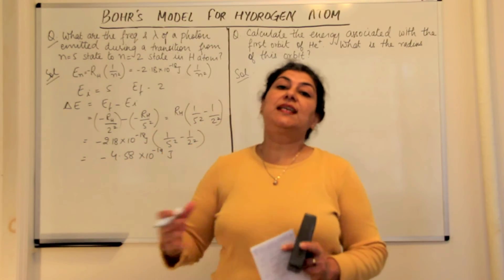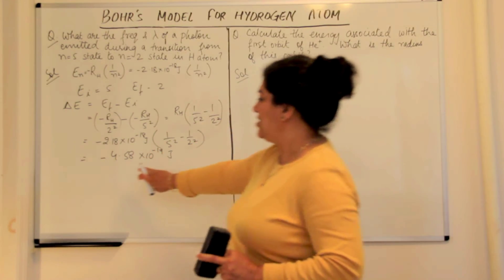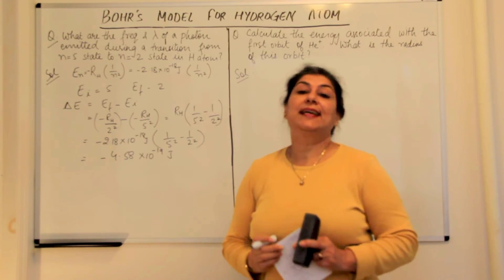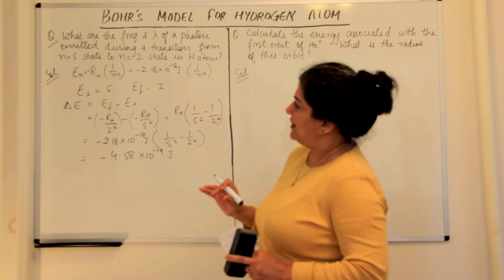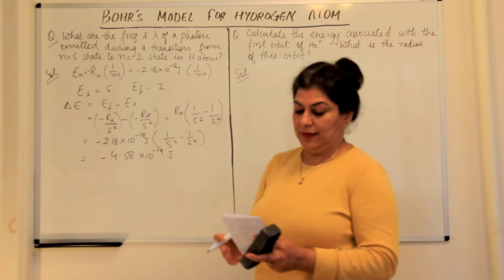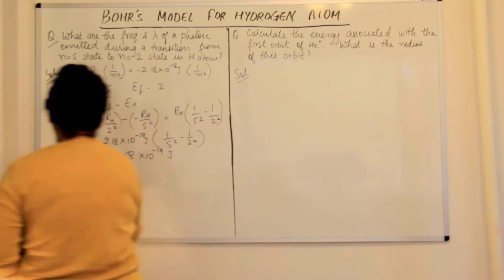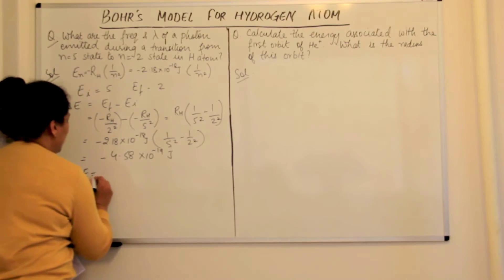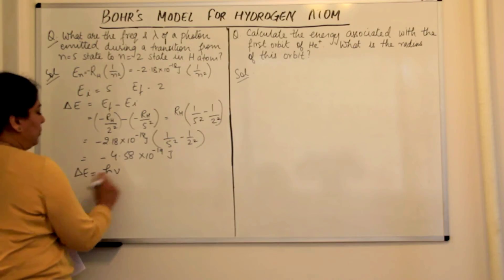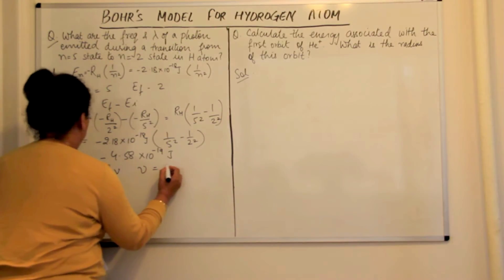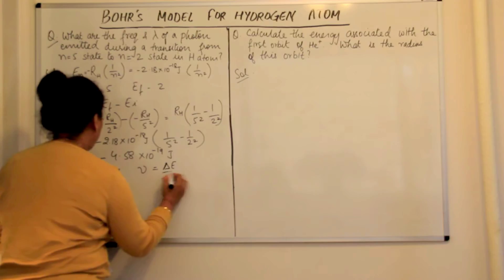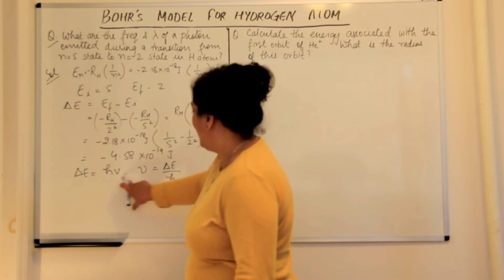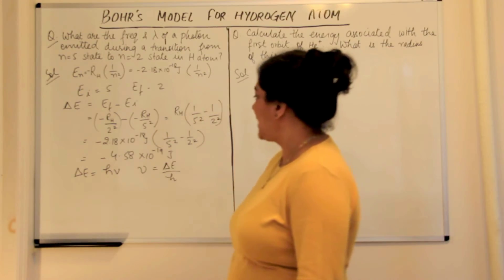Since it's negative, this is the energy that's emitted — the energy given out in the transition of the electron from the 5th energy state to the 2nd energy state. The question asks for frequency and wavelength. We know E = hν, therefore delta E = hν, and therefore ν = delta E / h. So frequency would be delta E divided by h, and delta E we have just calculated.